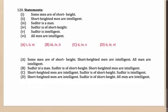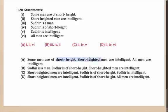One final question, just so that you get the idea completely. Some men are of short height; short height men are intelligent, and a lot of other information is given. I take options A, B, C and D and list them down. Option A: some men are of short height; short heighted men are intelligent. I eliminate the common part, which is short heighted, and I am left with some men are intelligent. But the given conclusion is all men are intelligent, which is the incorrect conclusion. So option A is eliminated.